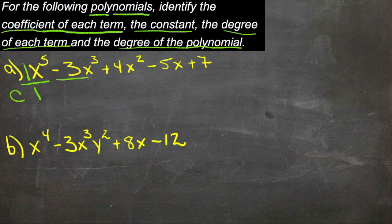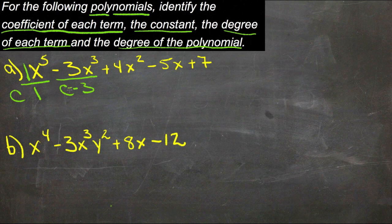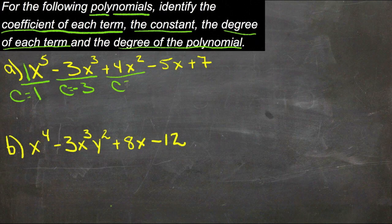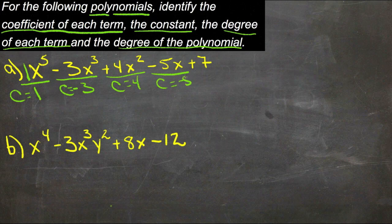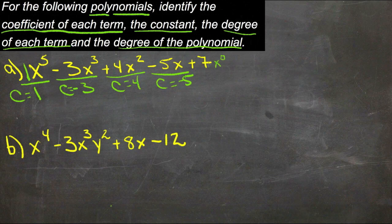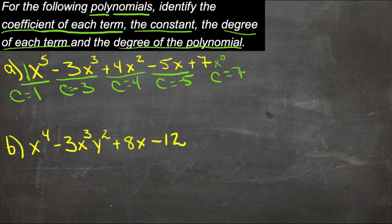Our second term is negative 3x cubed, so our coefficient there is negative 3. And our third term, our coefficient would be 4. Then we have a coefficient of negative 5. And finally we have sort of an x to the 0 term here. Remember, anything to the 0 is 1, so 7 times 1 is just 7. We can think of this as an x to the 0 term, and the coefficient then would be 7.